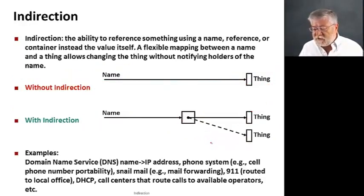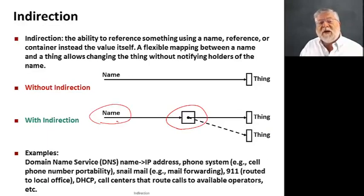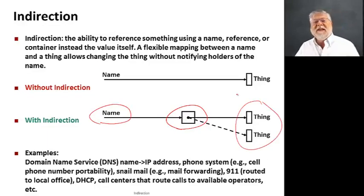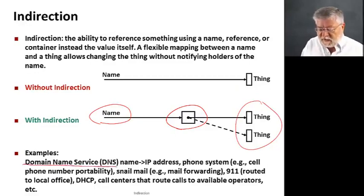All right, so this is how indirection works and there's lots and lots of examples of this that rely on this ability to have a flexible mapping between a variable that stores a pointer and the actual object in memory, so that I can easily switch between what things I'm pointing to.